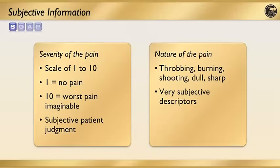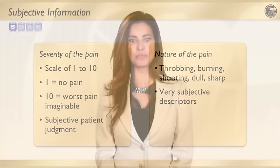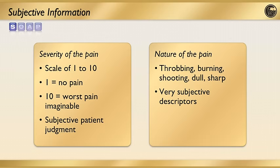For severity, it's nice to have a reproducible scale — ask on a scale of one to ten, where one is no pain and ten is the worst pain imaginable. Comparing from one time period to the next gives you some idea of the time course of their pain. Ask them to describe the pain: is it throbbing, burning, shooting, or sharp? These are subjective descriptors, but there is some indication that different types of pain — endodontic versus neuralgic versus muscle pain — may have different natures.